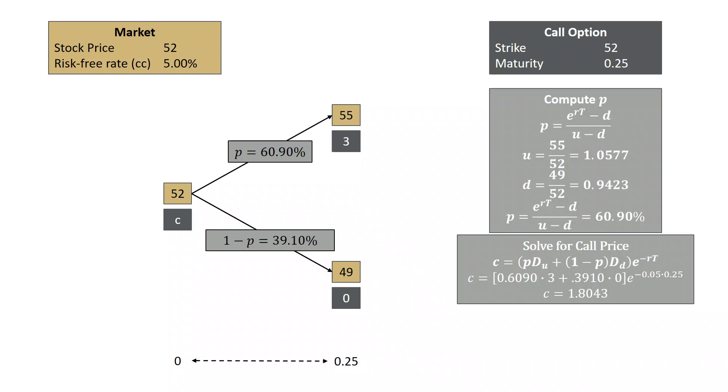In this particular version of pricing, we calculated the risk-neutral probabilities, and we found the probability of the stock going from 52 to 55 in three months was 60.90%, and the risk-neutral probability of the stock going down to 49 was 39.10%. And we were able to find a call price of 1.8043.